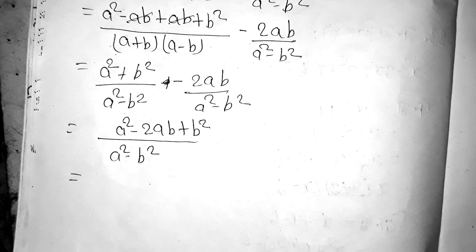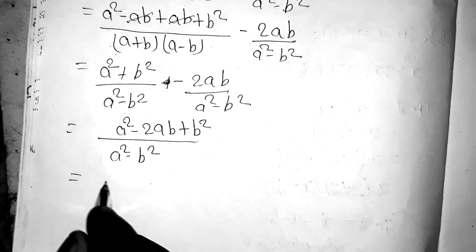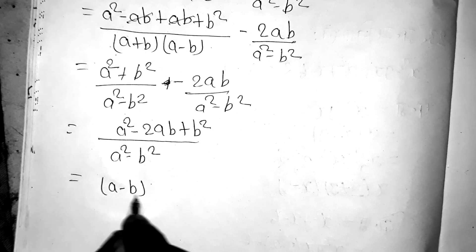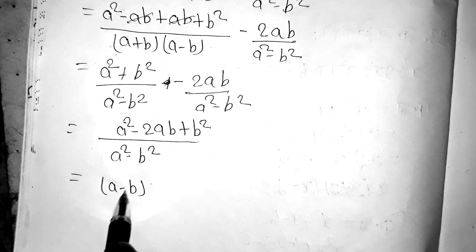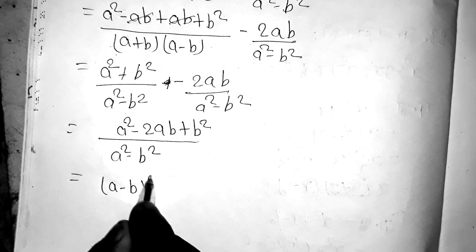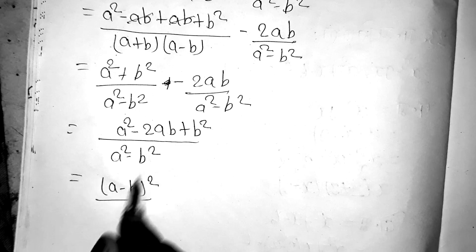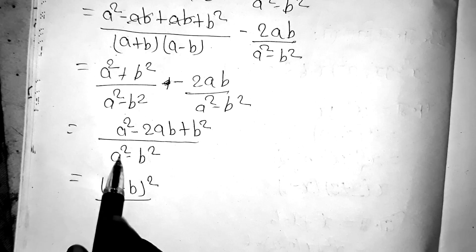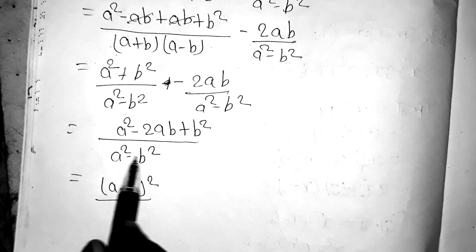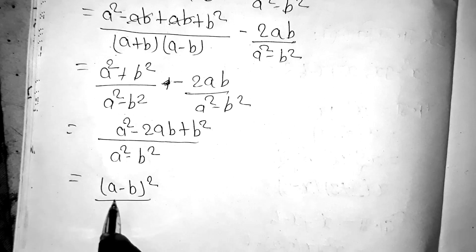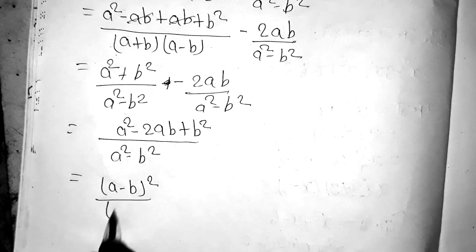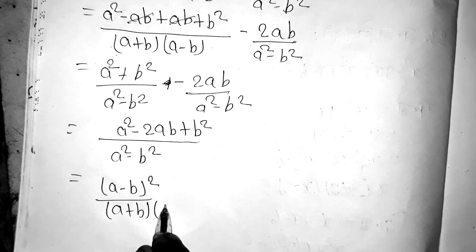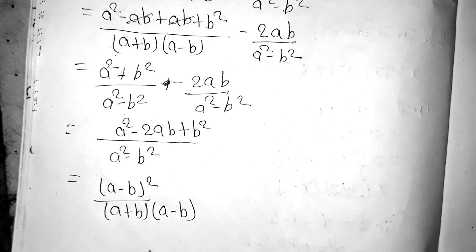The formula is a square minus 2ab plus b square, which is the a minus b whole square formula. Using a square minus b square, we can factor it as a plus b into a minus b.